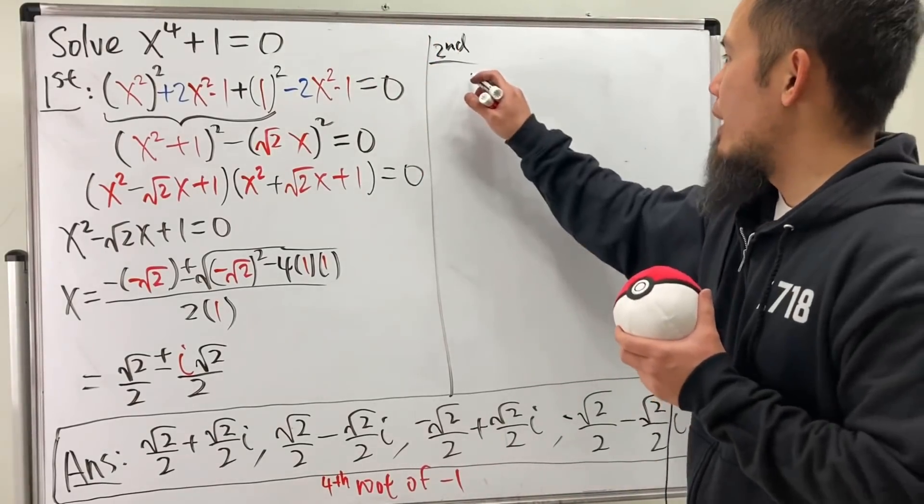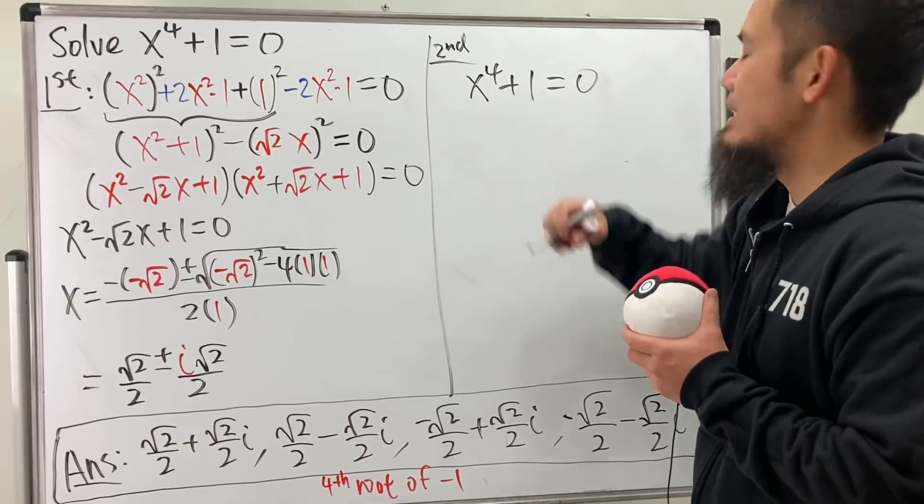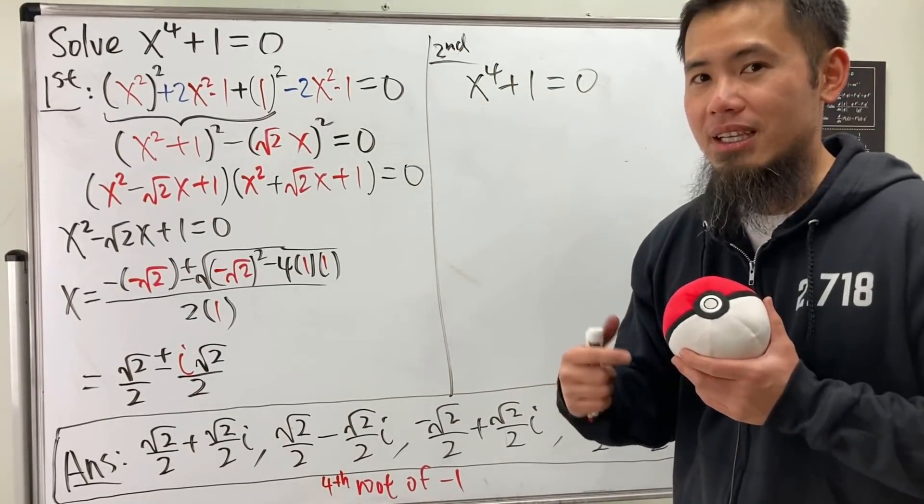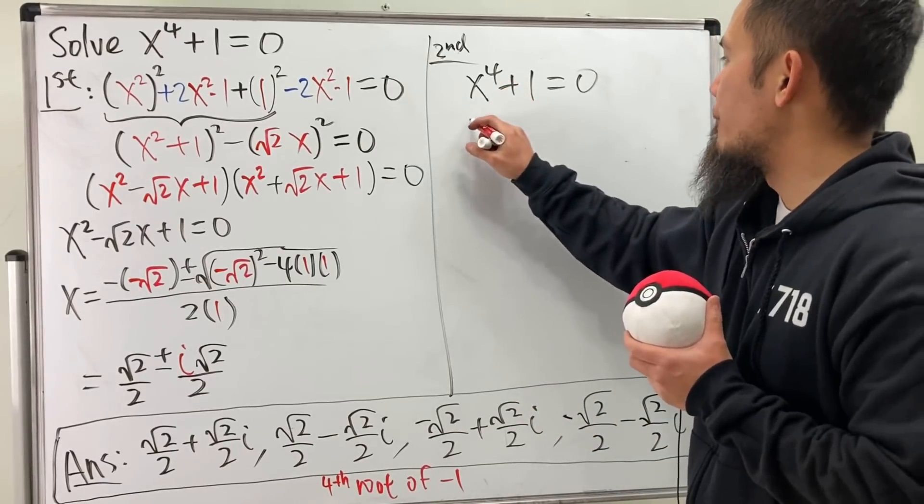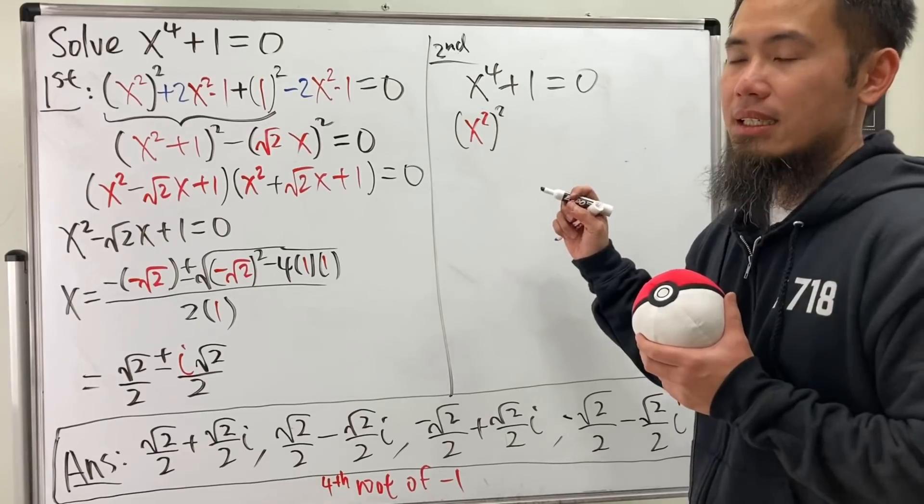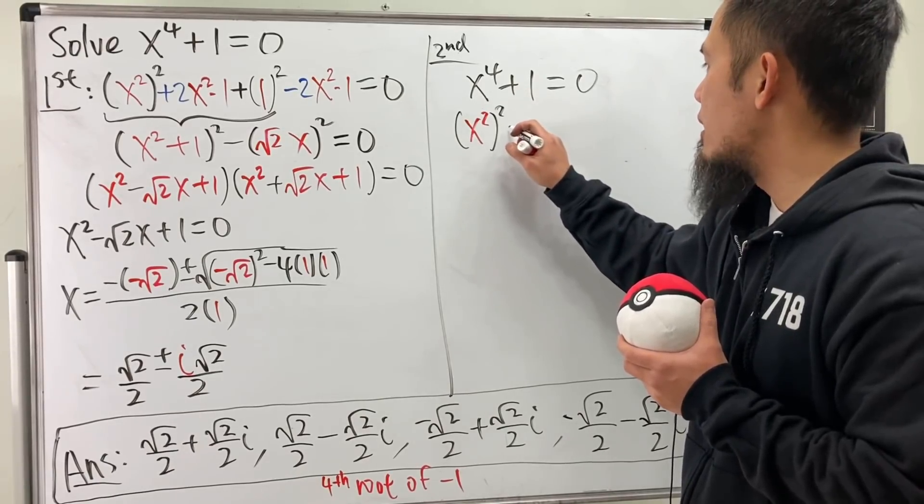For the second way, I will show you how to factor this with complex numbers. First, we will have to look at this as a difference of two squares. So x squared, squared, no problem on that. But I need to look at this as a difference, so let's put down a minus.